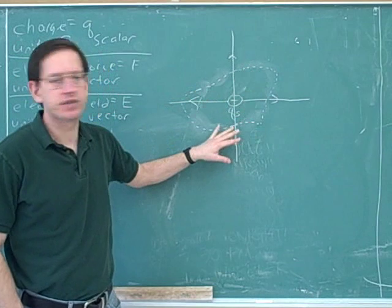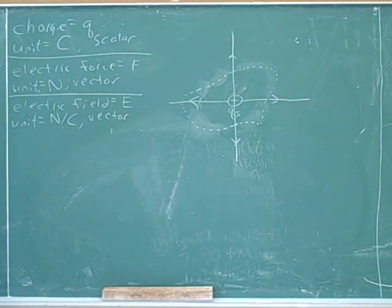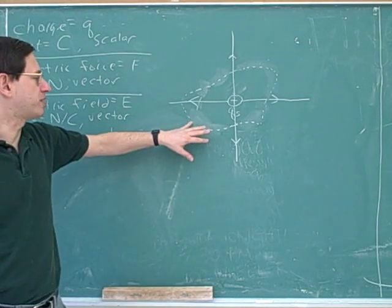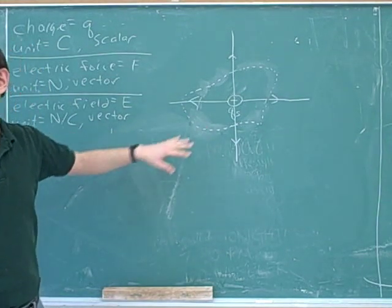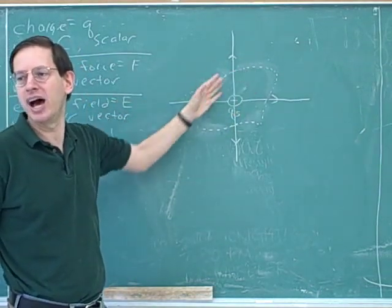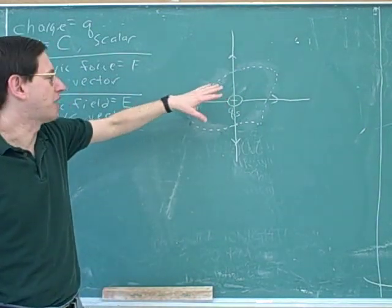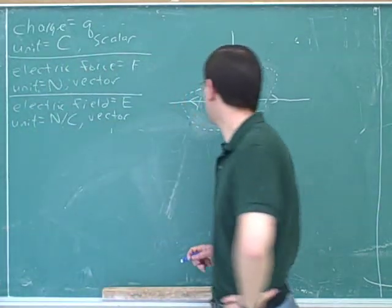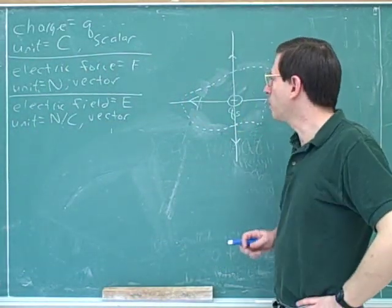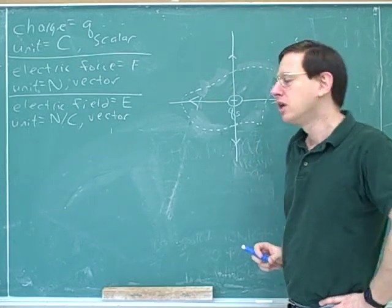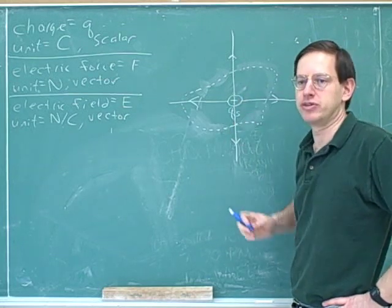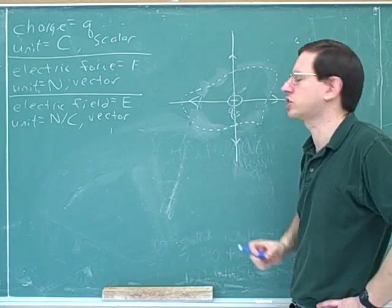Here we have another source charge, and I've drawn a surface around it. We're going to be concerned with closed surfaces — a closed surface is one that has an inside and an outside, meaning you can't get from the inside to the outside without passing through the surface, which means the surfaces have to be three-dimensional. This represents an irregular egg-shaped three-dimensional surface extending out of and behind the blackboard. What we want to show is that the amount of electric field that exits a surface only depends on how much charge is enclosed in that surface.